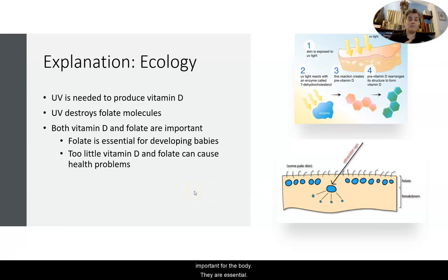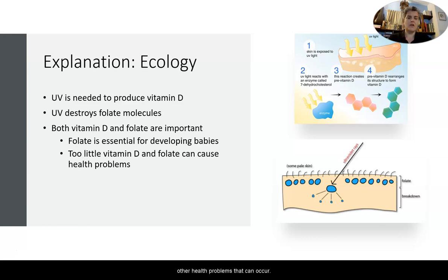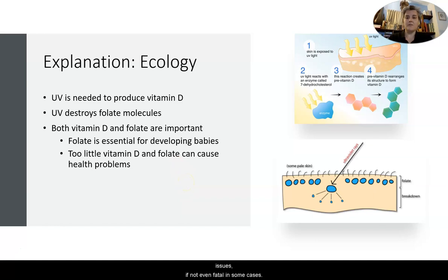Both vitamin D and folate are essential for the body. Folate is essential for the development of babies — we talked about spina bifida and anencephaly if there is too little folate. If there's not enough vitamin D, other health problems can occur. The combination of deficiencies in both can result in really severe health issues, fatal in some cases.